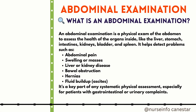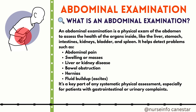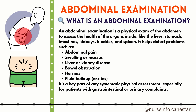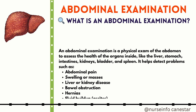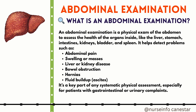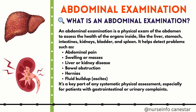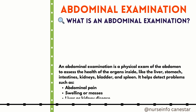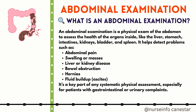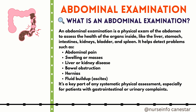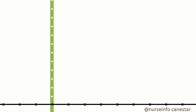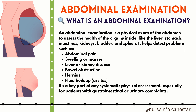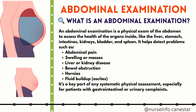An abdominal examination is a physical exam of the abdomen to assess the health of the organs inside, like the liver, stomach, intestines, kidneys, bladder, and spleen. It helps detect problems such as abdominal pain, swelling, masses, liver or kidney disease, bowel obstruction, hernias, and fluid buildup (ascites). It's a key part of any systematic physical assessment, especially for patients with gastrointestinal or urinary complaints.